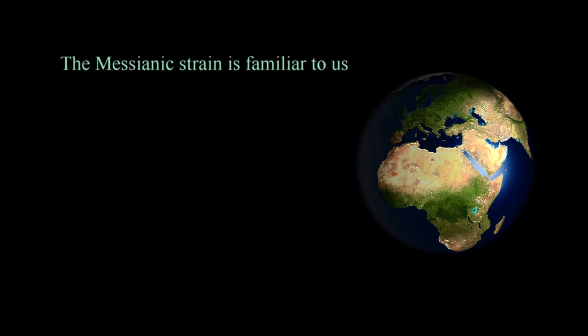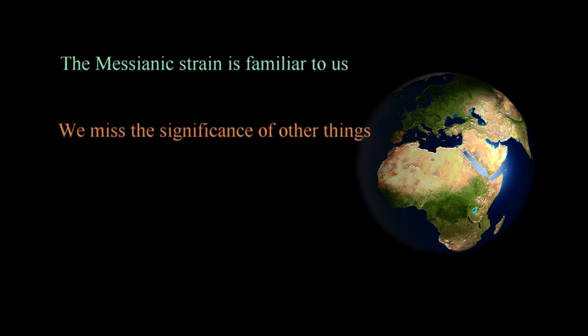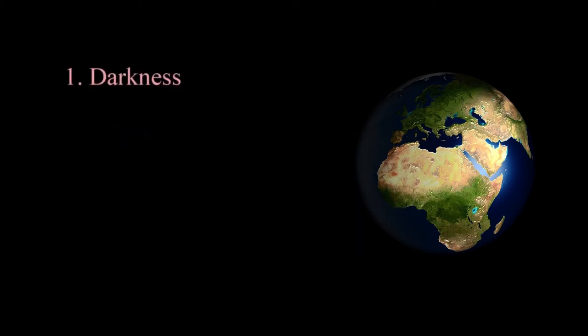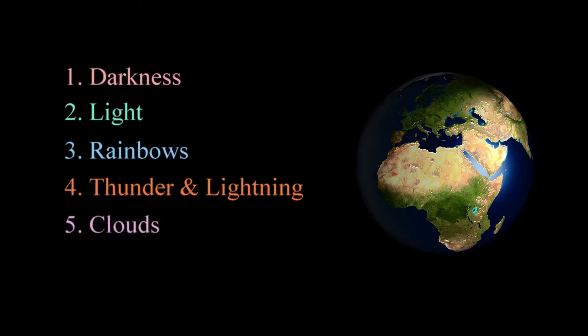As we look at the scriptures, we see the messianic strain of prophecies and prophetic elements, but we don't often understand the role of other things that are equally important. The nature of the world, structure of creation, and processes that surround us are prominent figures in the biblical narrative. In this lesson, we'll take a look at darkness, light, rainbows, thunder and lightning, clouds, and whirlwinds.